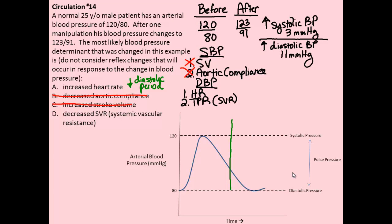We still contract, we still have systole, but because we've increased the heart rate, the heart spends less time relaxing between each heartbeat. The resulting profile shows the diastolic blood pressure would be elevated. So if we increase the heart rate, we should see an increase in the diastolic blood pressure, which fits with the large increase in diastolic pressure observed in this patient.